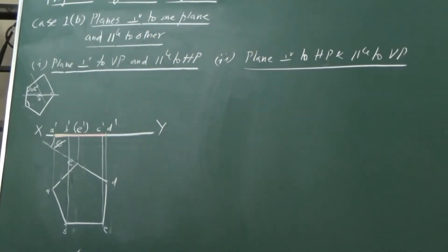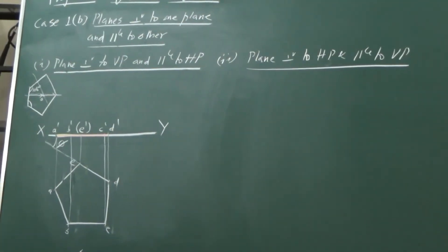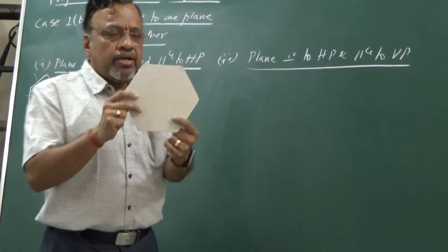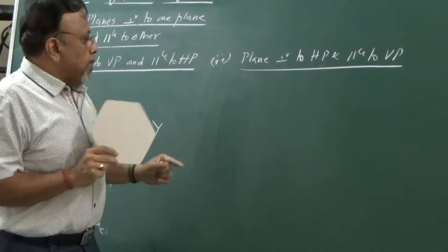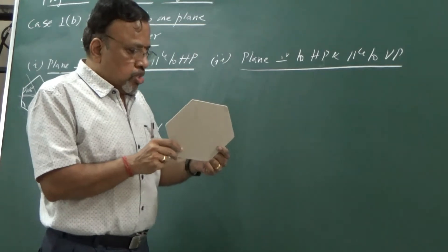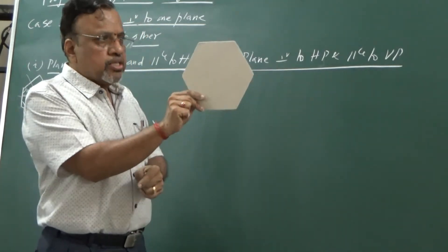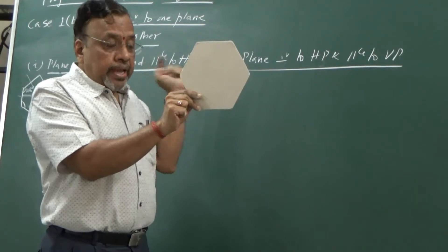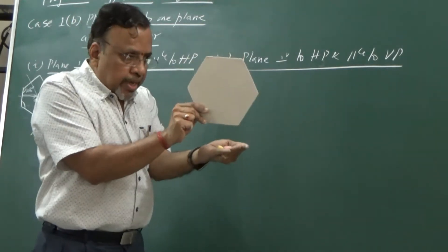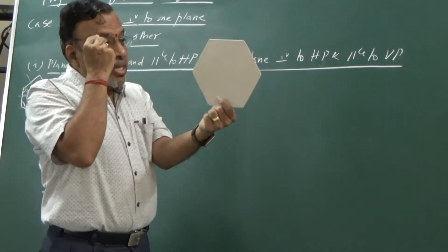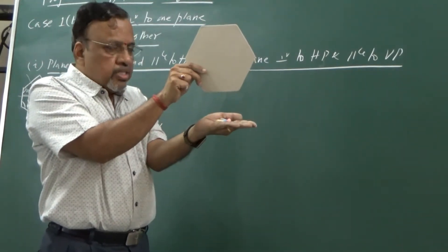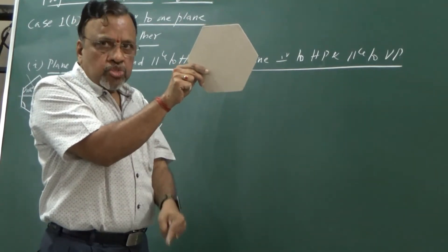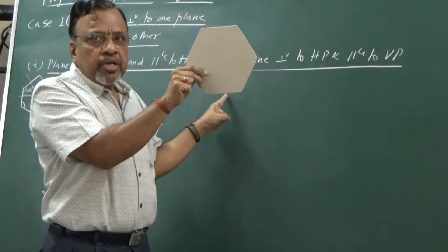Let us consider one more lamina - I will consider a rectangular lamina. Now, if you want to go to this case, the plane is perpendicular to HP and parallel to VP. I can hold it such that it is perpendicular to HP and parallel to VP.